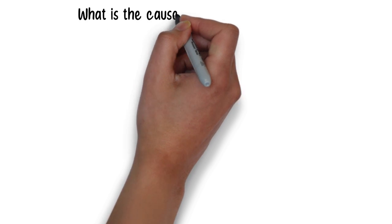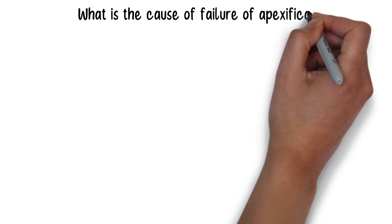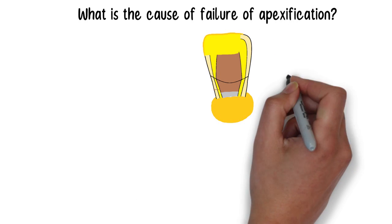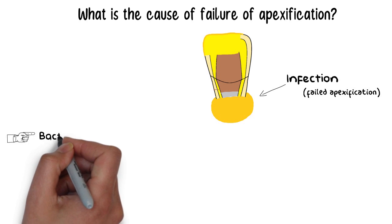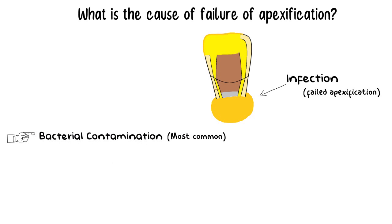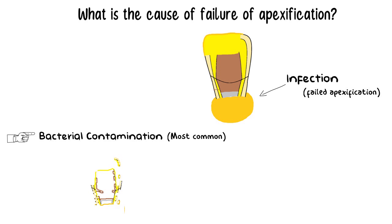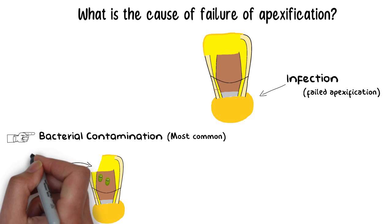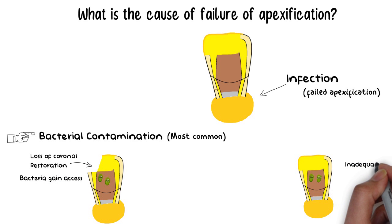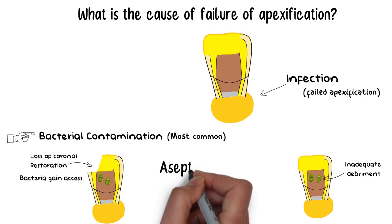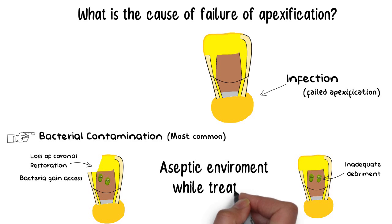Let's discuss the causes of failure of apexification. Failure will usually result in an infection being developed and ultimately the tooth will get extracted. The most common cause of failure is bacterial contamination, which can be caused by loss of the coronal restoration — through which bacteria can gain access — or inadequate debridement of the canal during treatment. Hence, an aseptic environment while treating is very crucial for the long-term success.